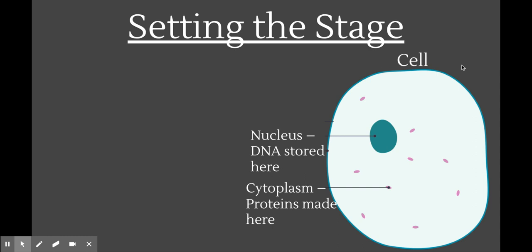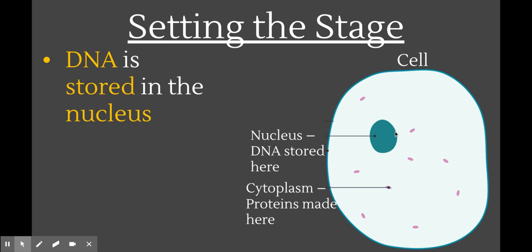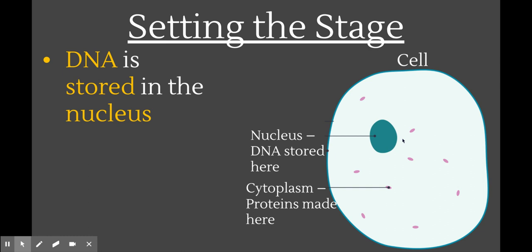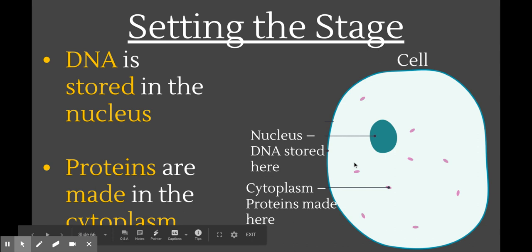Before we talk about protein synthesis, we have to remember that DNA is stored in a special organelle called the nucleus, within the cell. Prokaryotes don't have a nucleus, so this does not apply to prokaryotes. But eukaryotes, such as humans and all other animals and plants, they have a nucleus. So we are talking specifically about gene expression in eukaryotes in this lecture. DNA is stored in the nucleus, but proteins are made out here in the cytoplasm, in this liquidy gooey part of the cell.